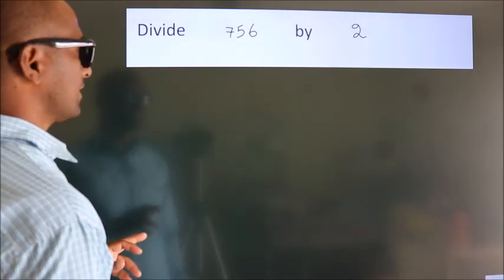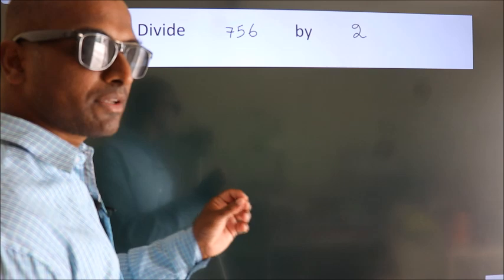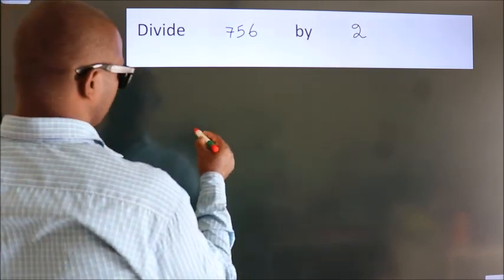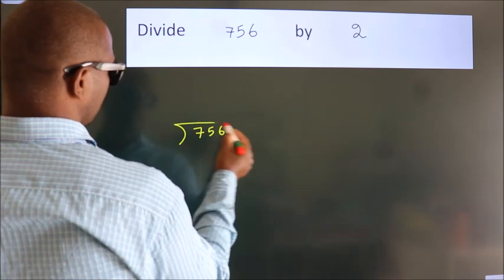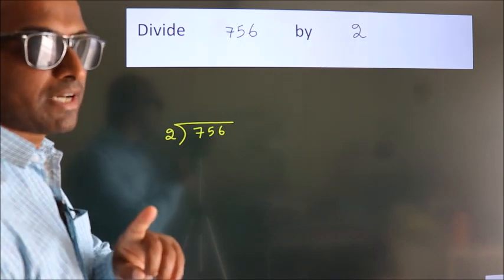Divide 756 by 2. To do this division, we should frame it in this way: 756 here, 2 here. This is your step 1.